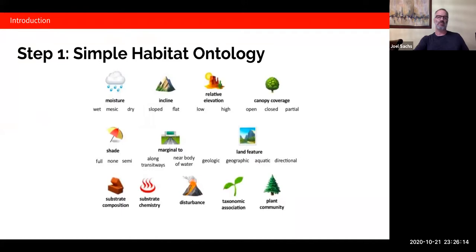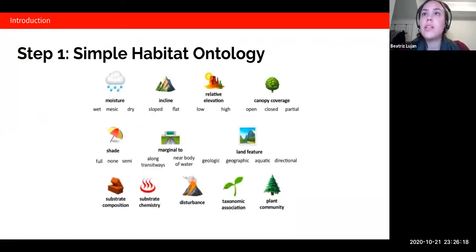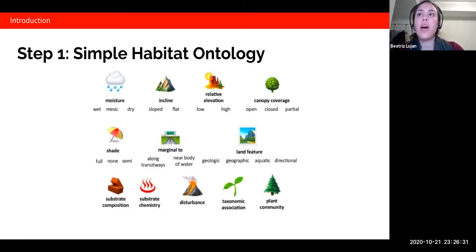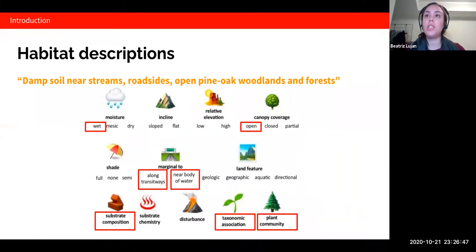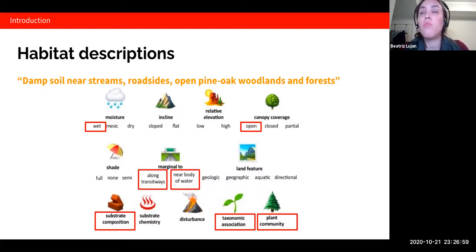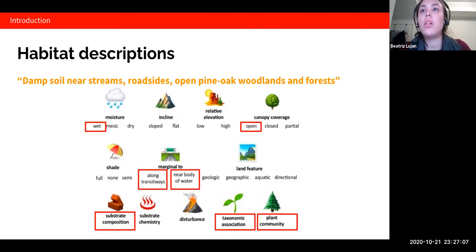In step one of this work we developed a simple habitat ontology after examining over 3,000 habitat descriptions across multiple plant families. The ontology is composed of 12 habitat classes — the first five make use of a controlled vocabulary and two have subclasses. The next step was to annotate the legacy habitat descriptions with the ontology terms. Going back to the previous example, 'damp soils near streams, roadsides, open pine-oak woodlands and forest' would be annotated as: moisture wet, canopy coverage open, along transit ways, near body of water, substrate composition soil, taxonomic association pine-oak, and plant community woodlands and forest.